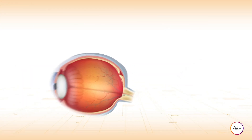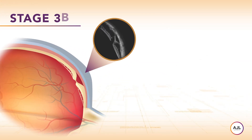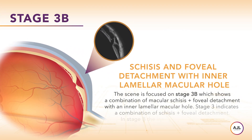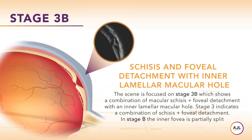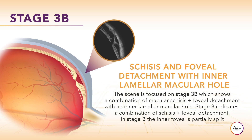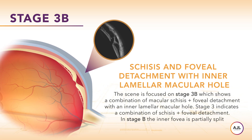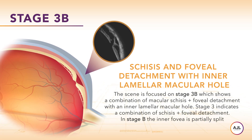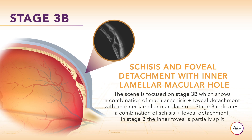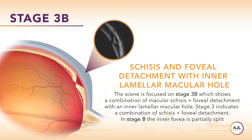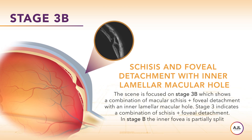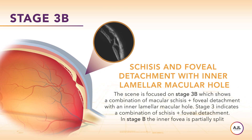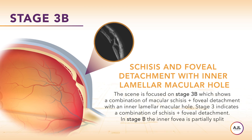Stage 3b shows a combination of macular schisis and foveal detachment with an inner lamellar macular hole. Stage 3 indicates a combination of schisis and foveal detachment. In stage B, the inner fovea is partially split.